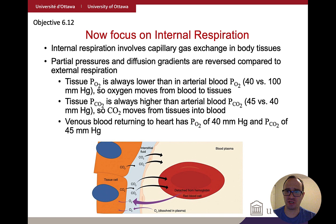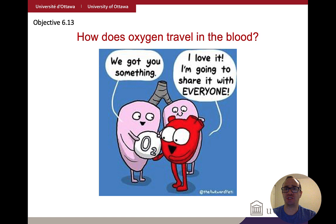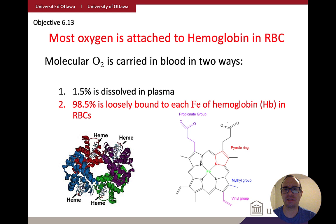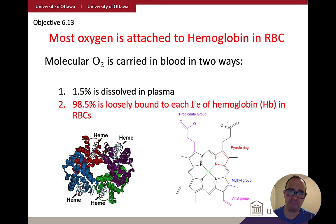So how does oxygen travel in the blood? There are actually two ways oxygen can be carried. Oxygen can dissolve in blood, but it doesn't dissolve very well — about 1.5% of the total oxygen is directly dissolved in the plasma. The vast majority, 98.5%, is bound to iron atoms in hemoglobin of red blood cells.